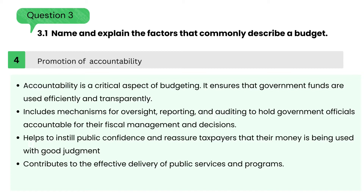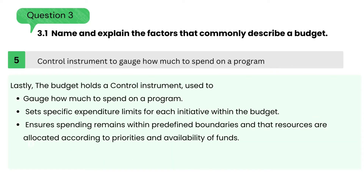4. Accountability is a critical aspect of budgeting. It ensures that government funds are used efficiently and transparently by including mechanisms for oversight, reporting, and auditing to hold government officials accountable for their fiscal management and decisions. These measures help to instill public confidence and reassure taxpayers that their money is being used with good judgment, and ultimately contribute to the effective delivery of public services and programs. Lastly, the budget holds a control instrument used to gauge how much to spend on a program — this involves setting specific expenditure limits for each program or initiative within the budget, to ensure spending remains within predefined boundaries, and that resources are allocated according to priorities and availability of funds.